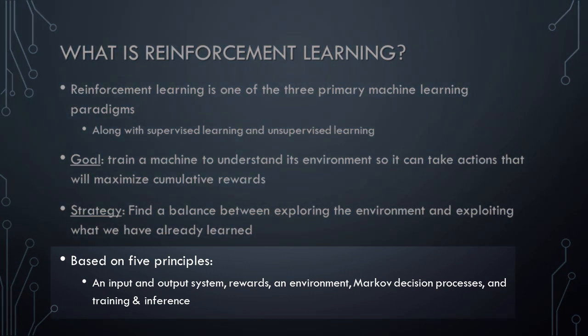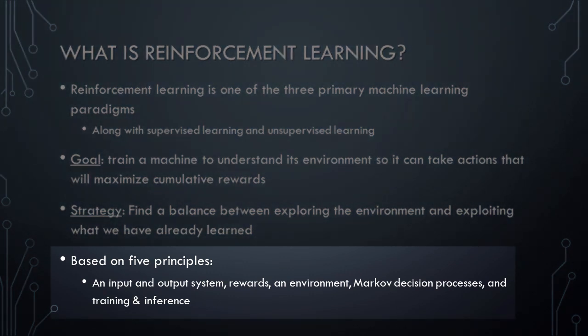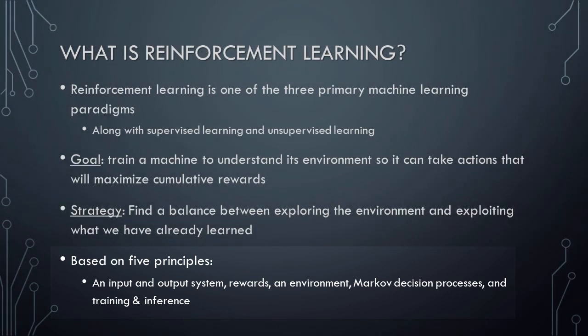As noted previously, all reinforcement learning systems are based on five principles: an input and output system, the notions of rewards and cumulative rewards, an environment in which the system operates, Markov decision processes, and training and inference modes. Let's learn about each of these principles in turn.